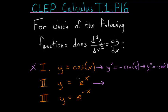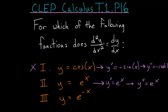e to the x is that special function in mathematics that when you take its derivative, it's just equal to the function. So the first derivative is just e to the x. The second derivative is e to the x. And any number of derivatives of this function, you're still going to get back e to the x. So it's true that the first and second derivatives are equal.